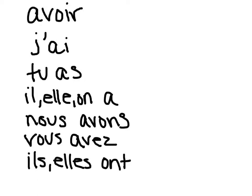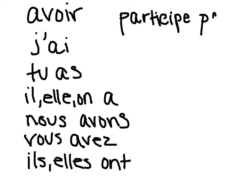So whenever you use passé composé, it's using the verb avoir and using the vocabulary in the past tense. So when you have j'ai, you use the participe passé of the vocabulary word you're using. So in this instance, we're using parler. So for parler, which means to talk, it would be j'ai, and then parlé.